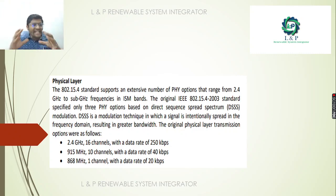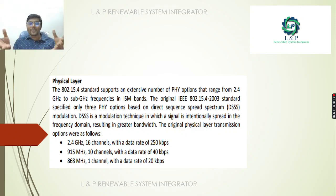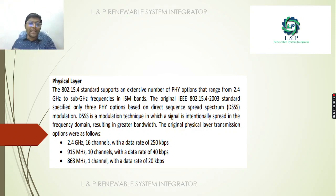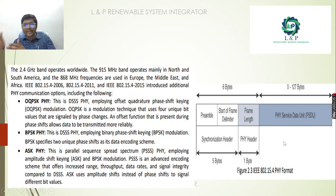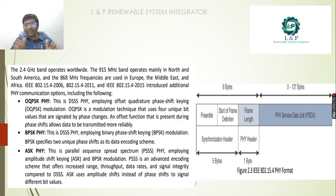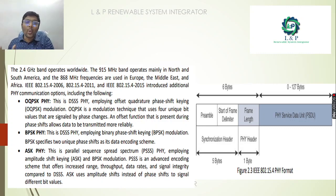For the IEEE 802.15.4 physical layer, it has transmission options: you can go for 2.4 GHz for 16-channel operation, or 915 MHz for 10-channel operation with data rates of 40 Kbps, or 868 MHz for one channel with a transmission speed of around 20 Kbps per second. The physical frame format includes a preamble, start of frame delimiter, frame length, and a physical service data unit — totaling 6 bytes from preamble to frame length, and 0 to 127 bytes for the physical service data.